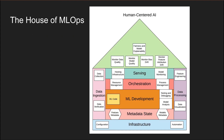To solve all of these problems in a standardized fashion, the umbrella term of human-centered AI was invented. The main components are: monitor data quality, monitor model quality, monitor bias drift, monitor feature attribution drift, and general questions on fairness and model explainability.